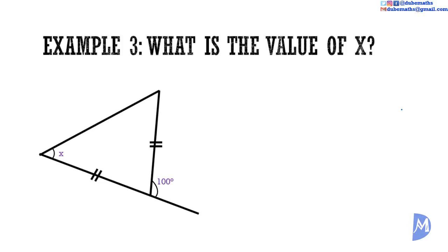An exterior angle is equal to the sum of the two opposite interior angles. This triangle is an isosceles triangle; the two equal sides are marked. Therefore, the two angles opposite these two equal sides are equal. So, if one angle is X, the other is also X. Since the exterior angle equals these two interior angles, X plus X equals 100 degrees, giving X equal to 50 degrees.